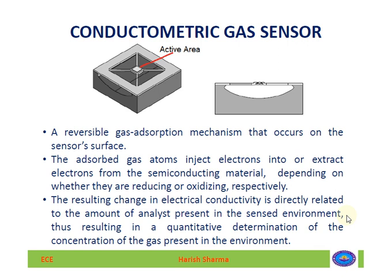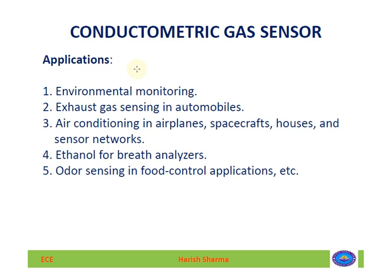Conductometric gas sensors are based on the reversible gas absorption mechanism that occurs on the sensor surface. The absorbed gas atoms will inject electrons into the semiconductor material or extract electrons from it, depending on whether they are reducing or oxidizing gases respectively.